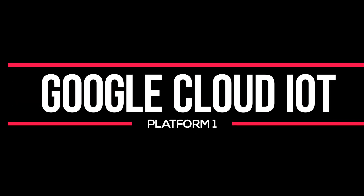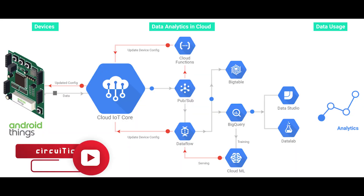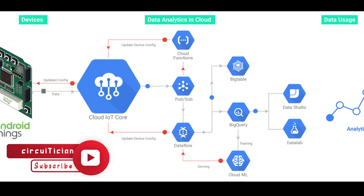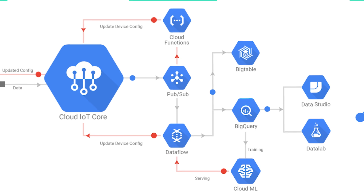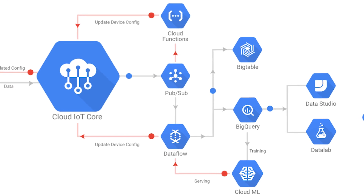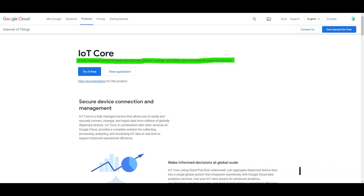Number one: Google Cloud IoT. It is one of the world's top Internet of Things platforms. Google Cloud IoT is the integration of various services that add value to connected solutions. The services include Cloud IoT Core, which allows you to capture and handle device data.